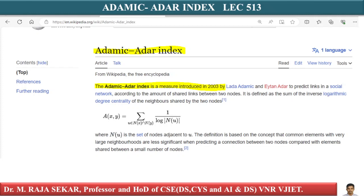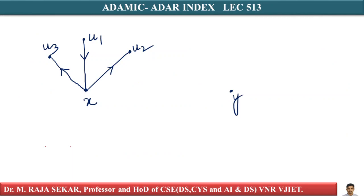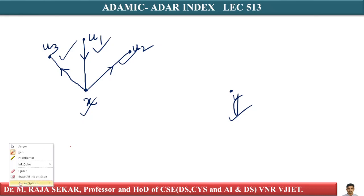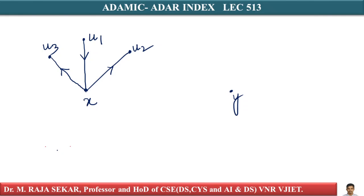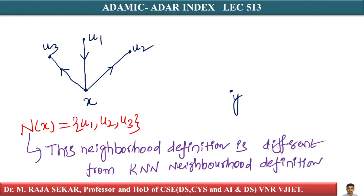Let's understand what this index or number is. Given two vertices X and Y, suppose I have vertex X and vertex Y. Users U1, U2, U3 which are connected to vertex X — either inwards or outwards — are called the neighborhood of X. So the neighborhood of X is U1, U2, U3. This is a different definition of neighborhood compared to the definition we saw in the K-nearest neighborhood algorithm.